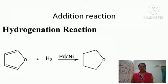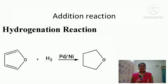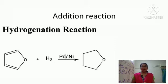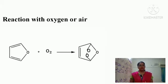One important addition reaction of furan is the hydrogenation reaction. When furan undergoes addition with hydrogen in the presence of a catalyst such as palladium, nickel, or platinum, all the carbon-carbon double bonds are hydrogenated and we get tetrahydrofuran as the product.